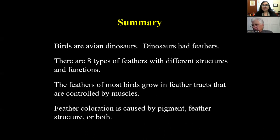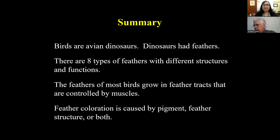Mina: Thank you so much, Bill, as always. I'll go through the questions. Pamela asks: do all bird species have uropygial glands? Bill: No, they don't all have them — cormorants, for example, don't. And a reminder to everyone: questions go in the Q&A, not the chat — there's a button at the bottom of your Zoom screen. Terry asks: is the bottom part of the feather — the part inside the bird muscle — hard or soft when the feather is attached to the bird?